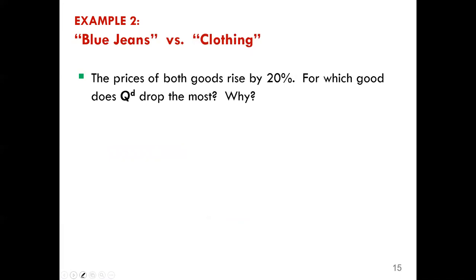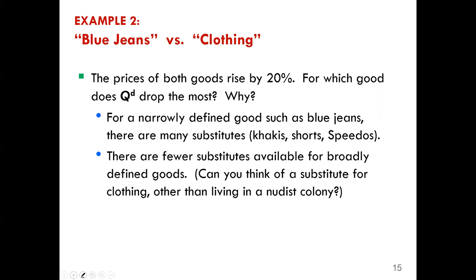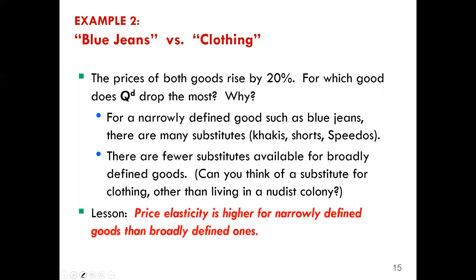Our second example compares blue jeans versus clothing. The prices of both goods rise by 20 percent. For a narrowly defined good like blue jeans, there are many substitutes — you have khakis, shorts, speedos. There are fewer substitutes available for broadly defined goods like clothing. The lesson: price elasticity is higher for narrowly defined goods than for broadly defined goods.